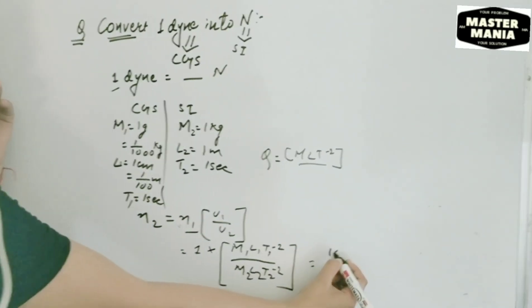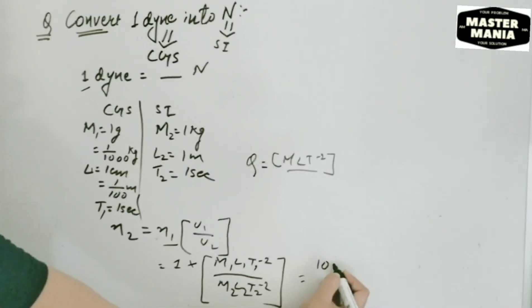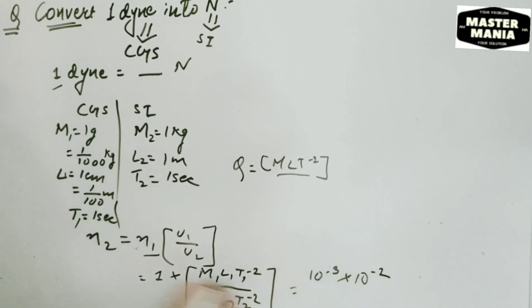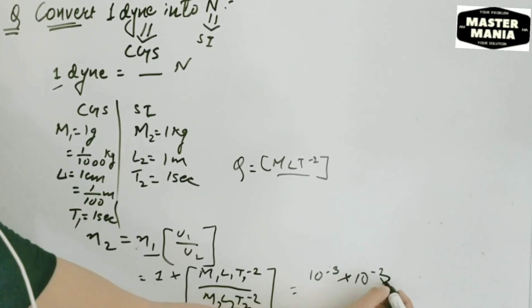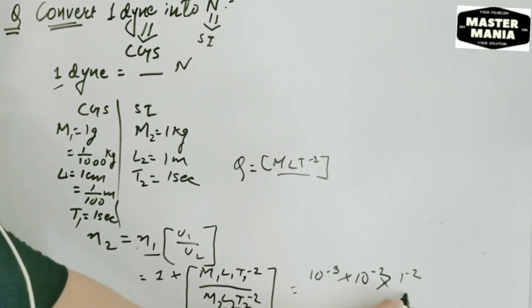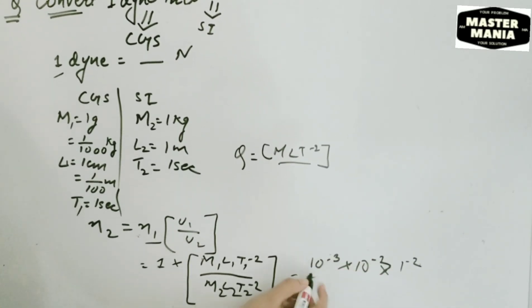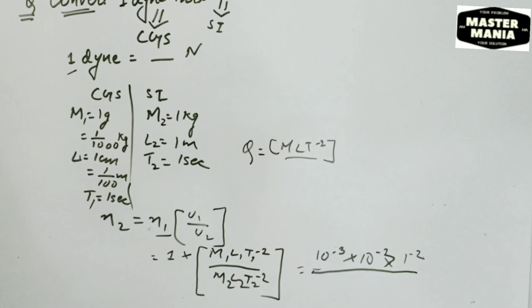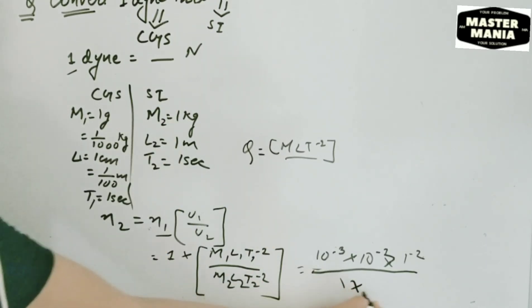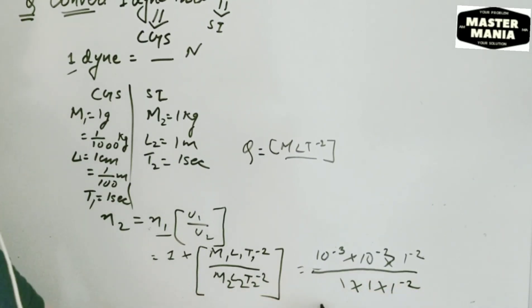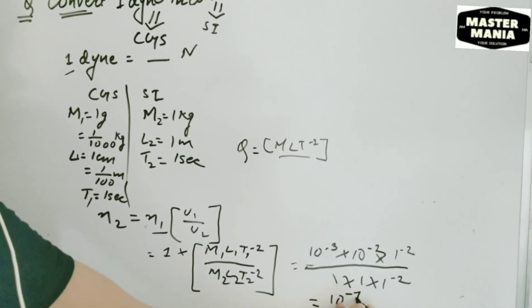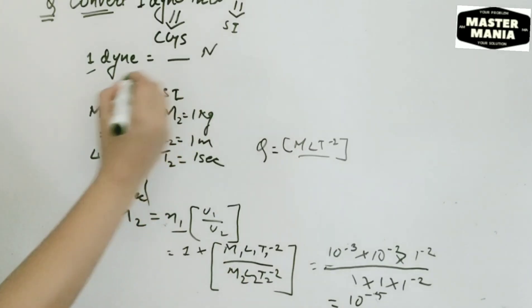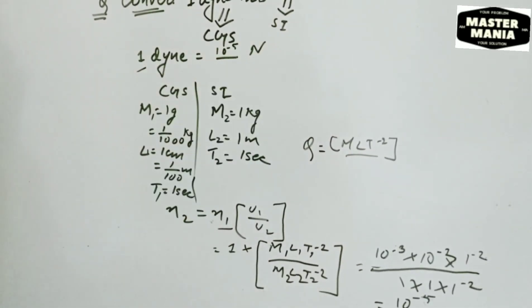So here, mass M1 = one by one thousand, which we can write as 10 to the power minus 3. Length L1 = one by one hundred, which we can write as 10 to the power minus 2. Time T1 = 1 to the power minus 2. For M2, L2, and T2 we substitute 1 into 1 into 1 to the power minus 2. Calculating this, we get 10 to the power minus 5. So we conclude that one dyne is equal to 10 to the power minus 5 newton.